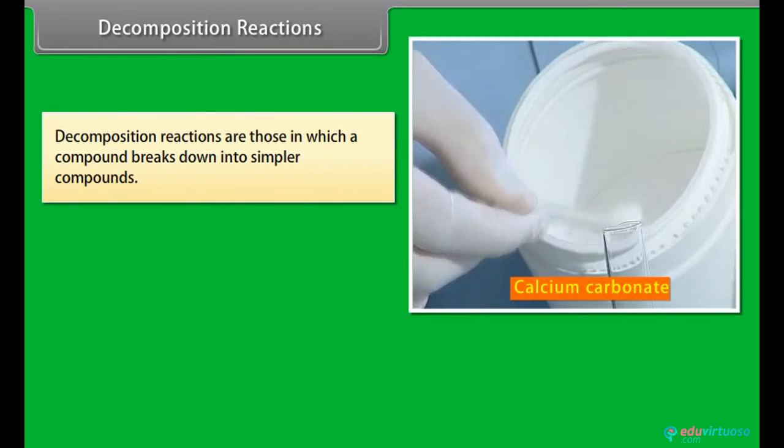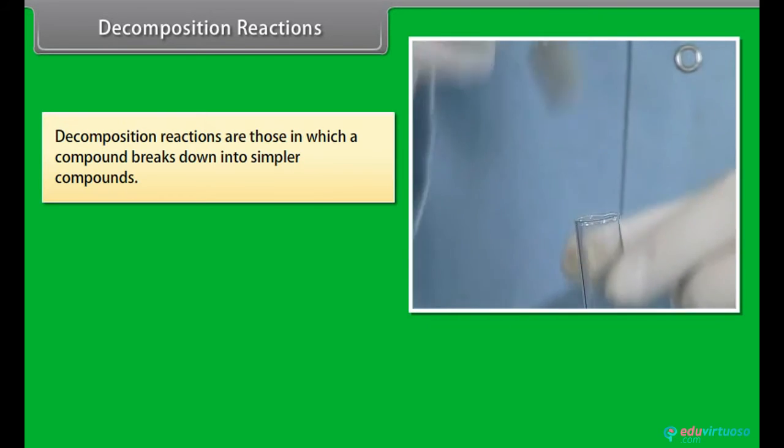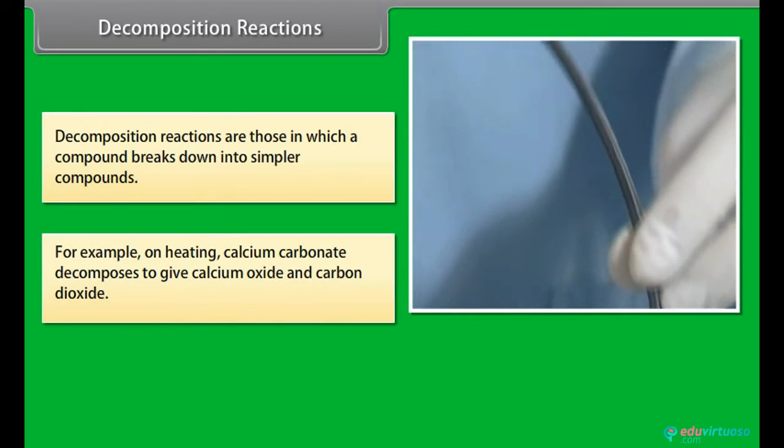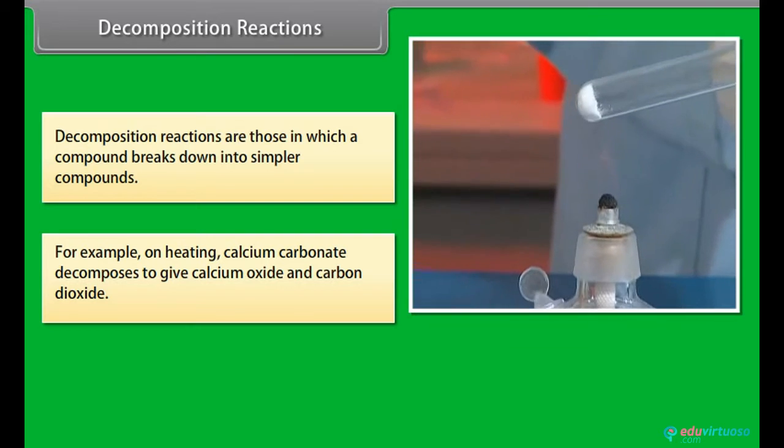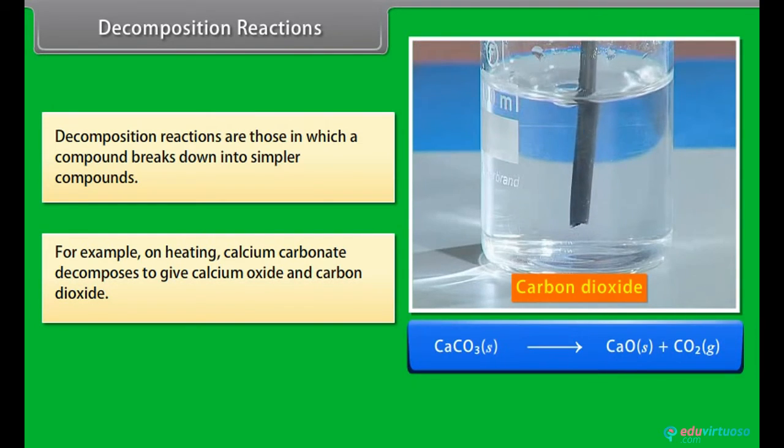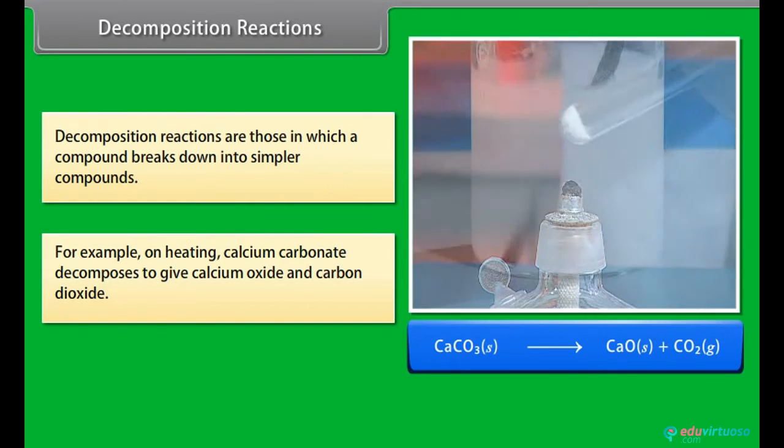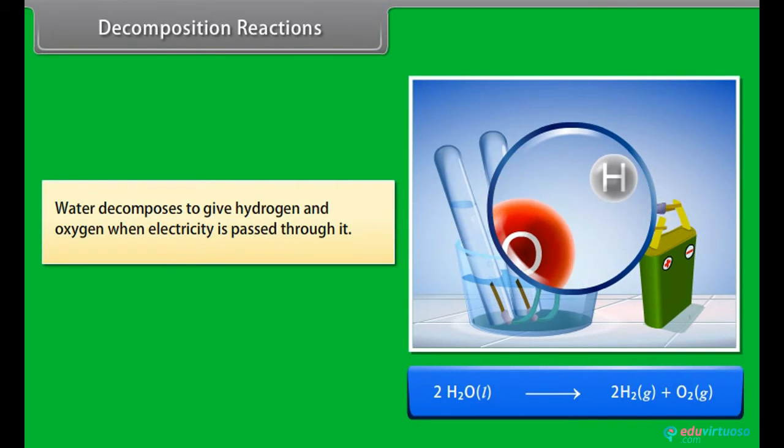Decomposition reactions: Decomposition reactions are those in which a compound breaks down into simpler compounds. For example, on heating, calcium carbonate decomposes to give calcium oxide and carbon dioxide. CaCO3 gives CaO plus CO2. Water decomposes to give hydrogen and oxygen when electricity is passed through it.